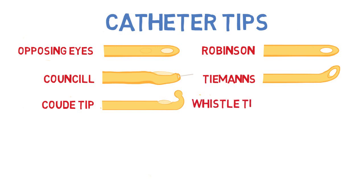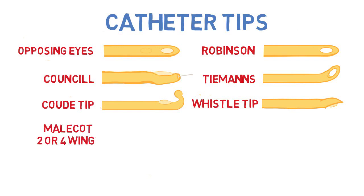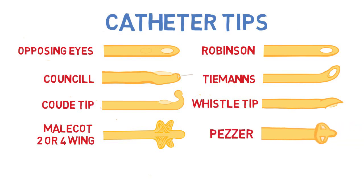Next is a whistle tip catheter, best used for evacuation of clots or debris out of the bladder. The next two types are referred to as self-retaining catheters. The Mallinckot comes in two or four winged and does not have a balloon mechanism — once deployed, the wings fold out, which prevents the catheter from becoming dislodged. The Pezzer looks very similar to a mushroom cap and has the same self-retaining idea as the Mallinckot. A hematuria catheter is usually a large French, has an opening for irrigation as well as drainage, and some are reinforced with metal rings to help prevent further blockage.